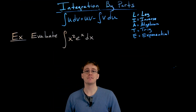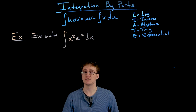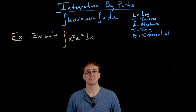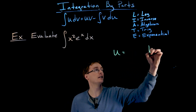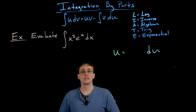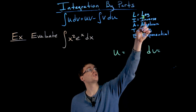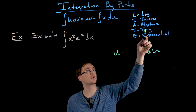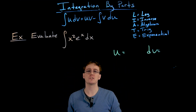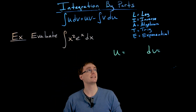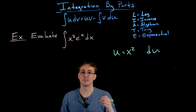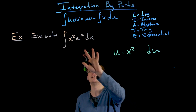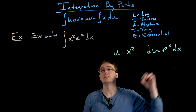In the next example, we evaluate the indefinite integral of x squared times e to the x. In an earlier example we found the antiderivative of x times e to the x, and knowing that will help us speed things up. Using the LIATE acronym, x squared is an algebraic function and e to the x is exponential, so u equals x squared and dv equals e to the x dx.